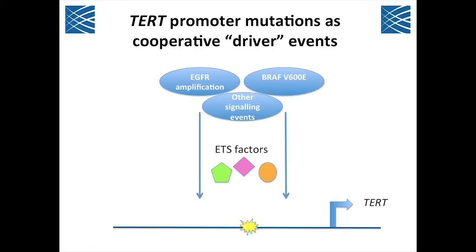What do we think these mutations are really doing? This is a model — I don't think we've proven any of this — but you can imagine that signaling events such as the BRAF V600E driver oncogenic mutation, EGFR amplification, and other events lead to dysregulation of ETS factors. At least in the case of the TERT promoter, this allows binding of ETS factors to the TERT promoter, which drives telomerase. This is a model for how non-coding promoter mutations could act in cooperation with upstream signaling events.